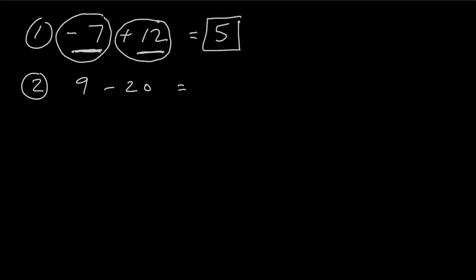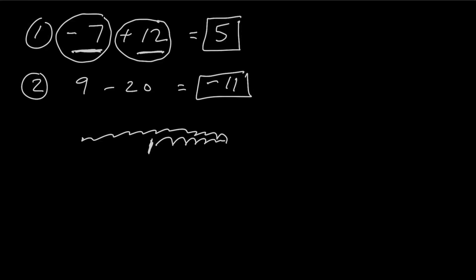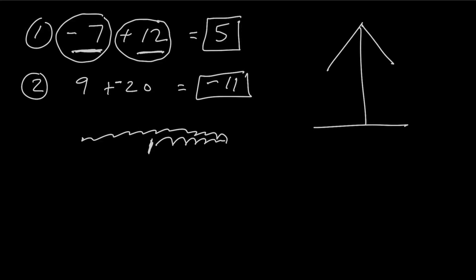For number 2, we have 9 minus 20. You can use that same technique — you're walking forward 9 steps, then walking backwards 20 steps. Another way I like to think about it is to think of subtraction as adding the opposite. When you see that subtraction sign, change it to an addition sign, but then change that second number to the opposite sign — if it's positive, make it negative; if it's negative, make it positive. Then you can think of this like a little balance beam, with negative numbers on one side and positive numbers on the other side.